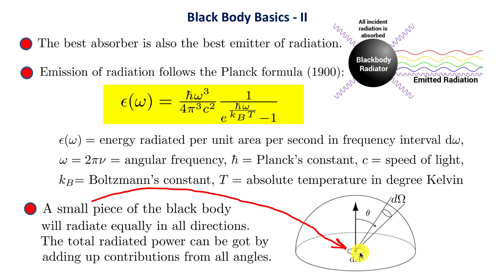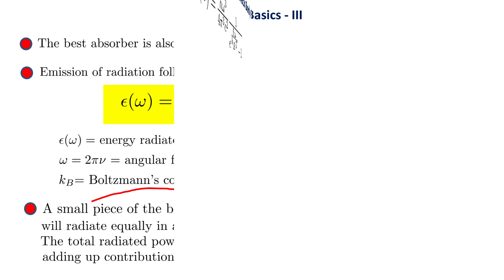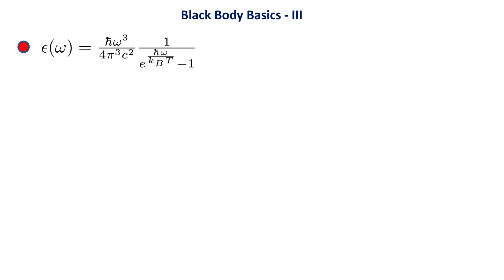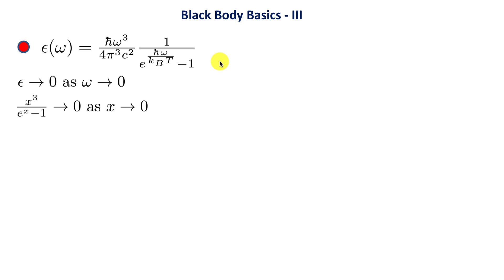Let's look at the Planck formula in more detail. As omega goes to zero, epsilon also goes to zero. This isn't obvious because as omega goes to zero, e to the zero is 1, leaving 1 over (1 minus 1). We handle this by noting the expression is of the form x-cubed over (e to the x minus 1). For very small x, e to the x is approximately 1 plus x, so the denominator becomes x, leaving x-squared, which goes to zero as x goes to zero.